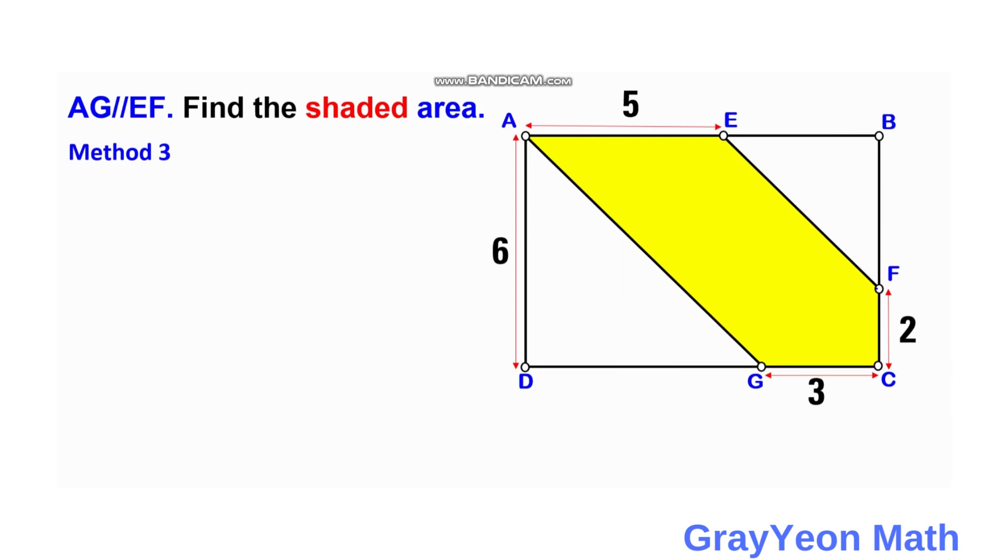For our method 3, we can actually draw a line from F to this A, G. And draw a vertical line from that point. Let's call this again as H. So upwards. So this is 6 minus 2. BF will be 4, and this will be 4. And from this HF to G. So this is 2 also. And this is 3.